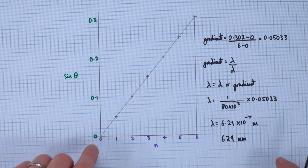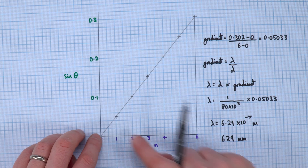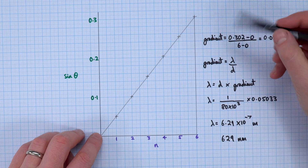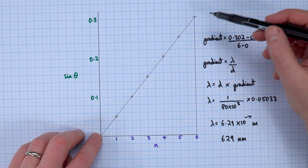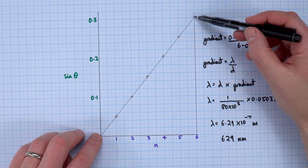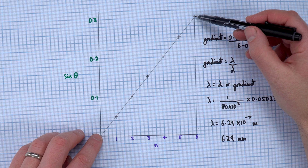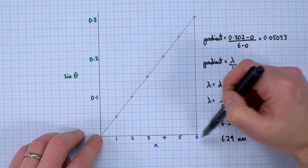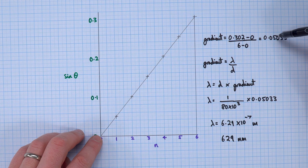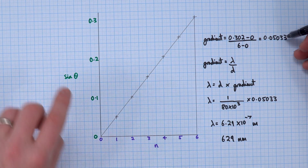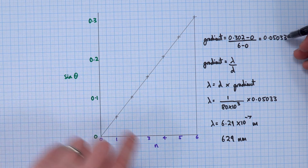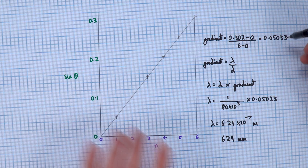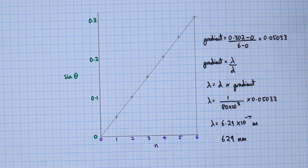I got the data, put in my line of best fit, and worked out the gradient as 0.302, which I could read from the graph quite easily, divided by six to get 0.05033. That's just the ratio of those two numbers, so there are no units — this is a unitless gradient. But we know that's equal to lambda over d.